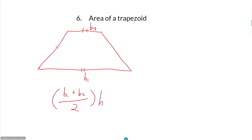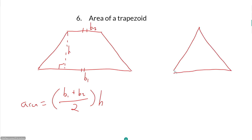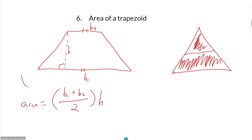Remember that the height of a trapezoid is not one of the slanted sides — it is the perpendicular line that forms a 90 degree angle with B1. Also, don't over-rely on this formula. Sometimes a trapezoid is buried within a triangle, and if you can't determine the height or base lengths directly, you can find the area of the big triangle and subtract the area of the smaller triangle, leaving just the trapezoid.